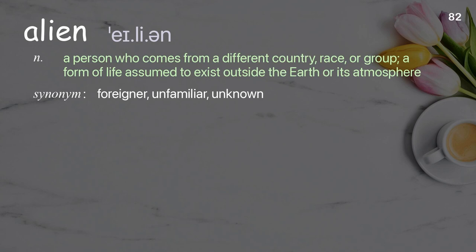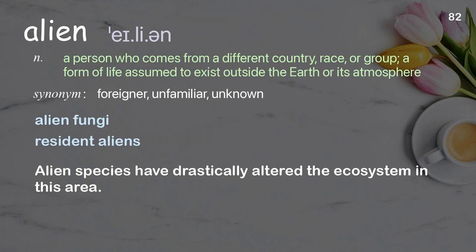Alien: a person who comes from a different country, race, or group; a form of life assumed to exist outside the earth or its atmosphere. Examples: alien fungi; resident aliens. Alien species have drastically altered the ecosystem in this area.